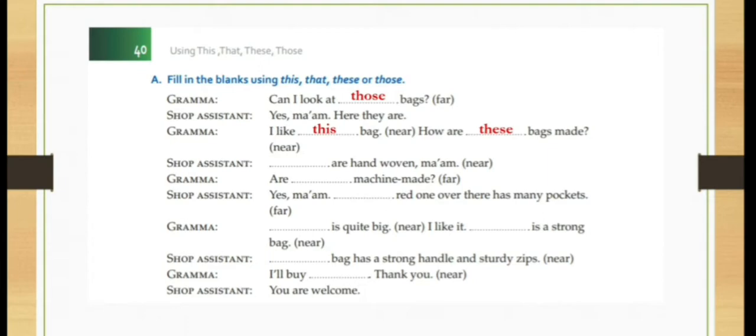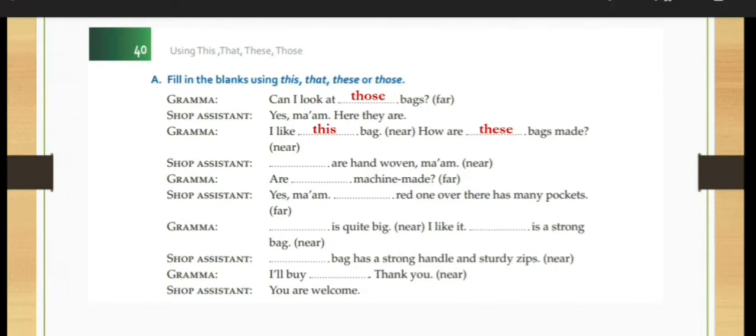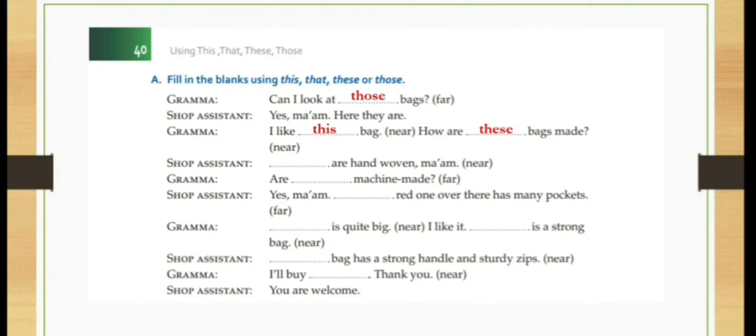Now, shop assistant. Dash are handwoven, ma'am. Now, it is near and he is talking. See, R is written. R we use for plural things, right? So what we will use? It is near. So we will use these. These are handwoven, ma'am.